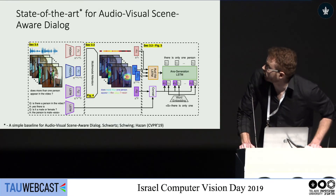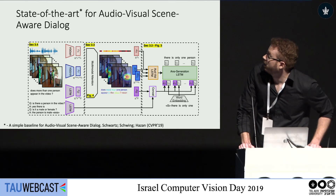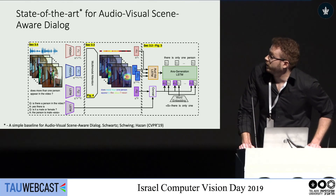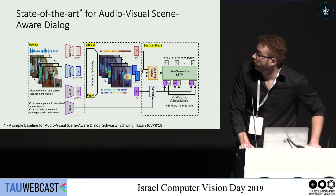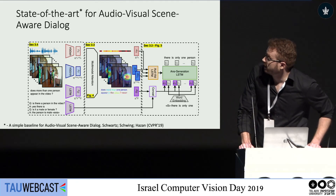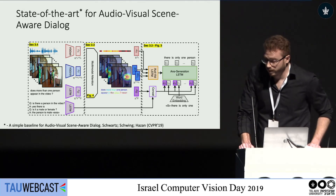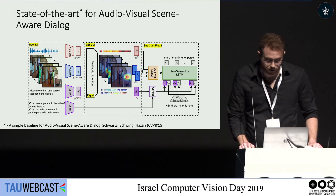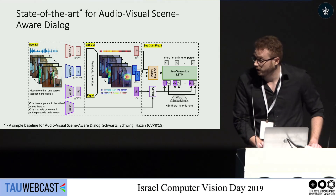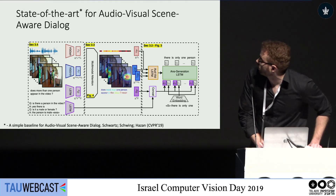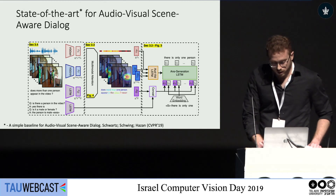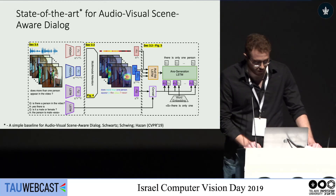This is how our architecture looks: we embed each frame using VGG and use VGG to embed the audio as well. We use an LSTM for textual input, and attend to all of them using the Factor Graph Attention, then use the attended vector to generate an answer.